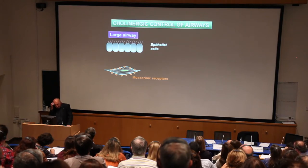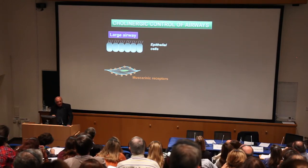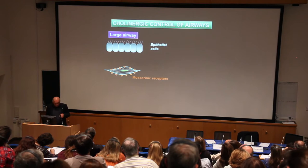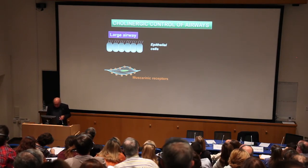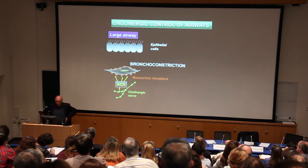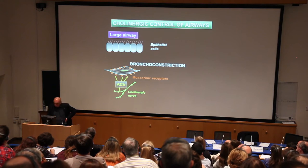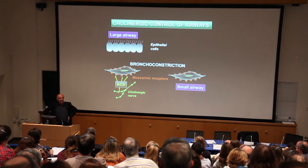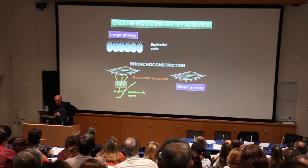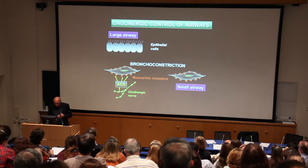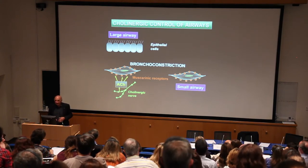In large airways, there are many muscarinic receptors on airway smooth muscle — we've actually measured their distribution in human airways. We know there's a high density of cholinergic nerves in human airways regulating these receptors and leading to bronchoconstriction. But what we found is that you have the same density of muscarinic receptors on small airways in humans, and yet there are no cholinergic nerves that go to these small airways. The mystery is what these receptors may be doing.